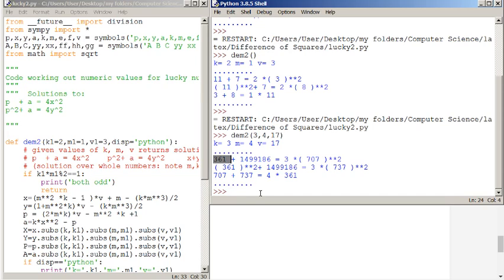So we see that three hundred and sixty-one plus some number is equal to three times seven hundred and seven squared. Three hundred and sixty-one squared plus the same number is equal to three times seven hundred and thirty-seven squared. So x plus y, this is x, y, x plus y is four times three hundred and sixty-one. So this is x, y is m times p. This is p plus a equals k, and p squared plus a equals k times y squared.